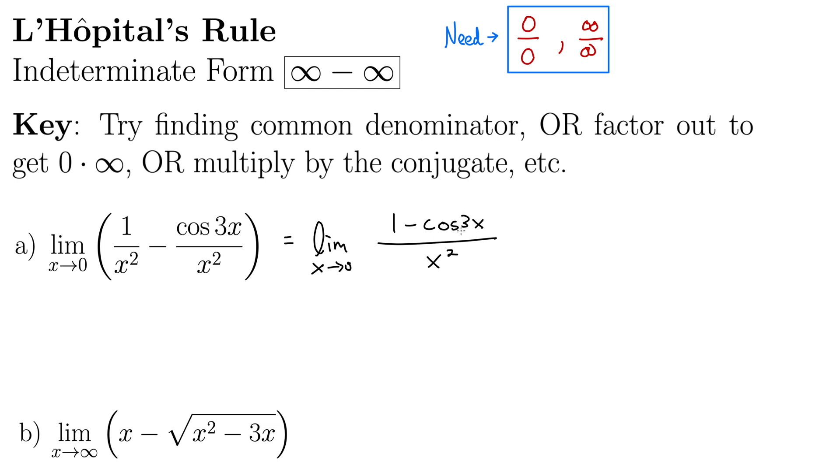Now letting x run to zero gives us one minus one which is zero on top. Plugging in zero for x on the bottom gives zero down there. Zero over zero is indeterminate but it's a good kind of indeterminate because now we can use L'Hôpital's rule.